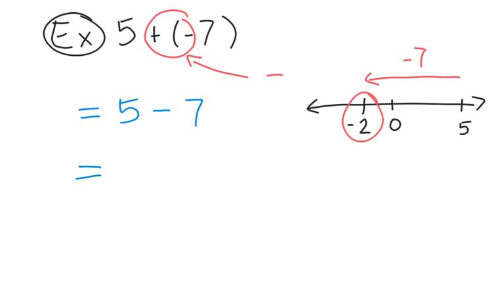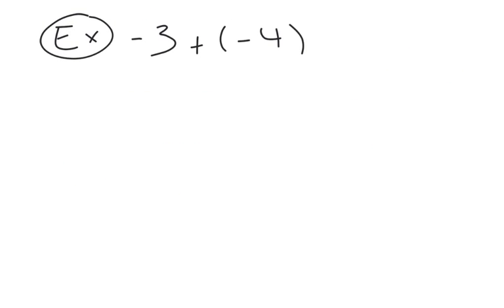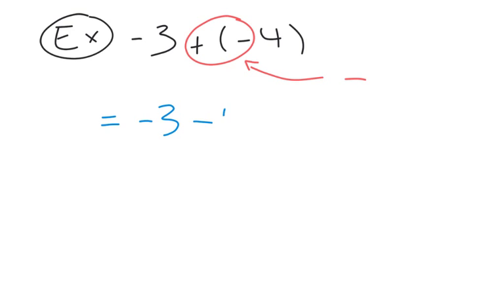I'm just going to write my final answer and put a little box around it to indicate it is my final answer. In our second question, we have negative three plus negative four. Again, the first thing you want to do is look for signs that are beside each other. We have a plus sign beside a negative sign, and we want to simplify that — when you have a plus sign beside a negative sign, that actually becomes negative. So let's rewrite our question as negative three subtract four.